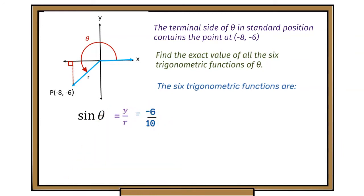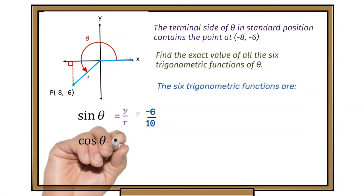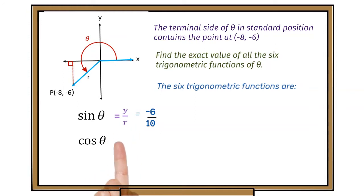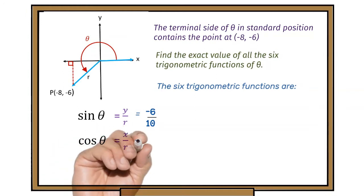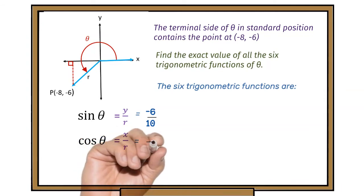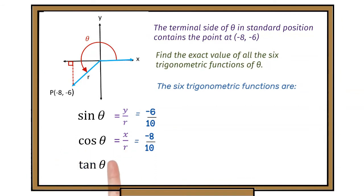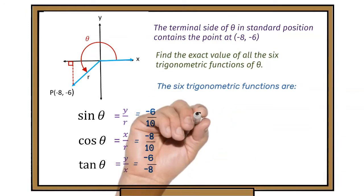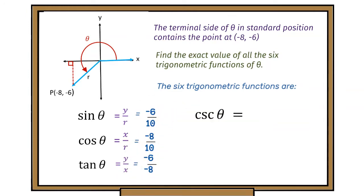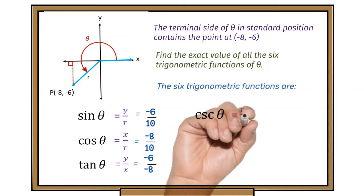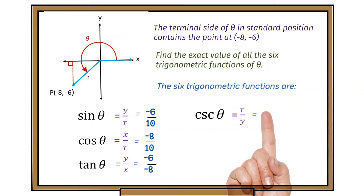Cosine of theta is x divided by r, which is −8 over 10. Tangent of theta is y divided by x. Now we've got our values. The reciprocal functions: cosecant is r over y, and that's going to be 10 over −6.